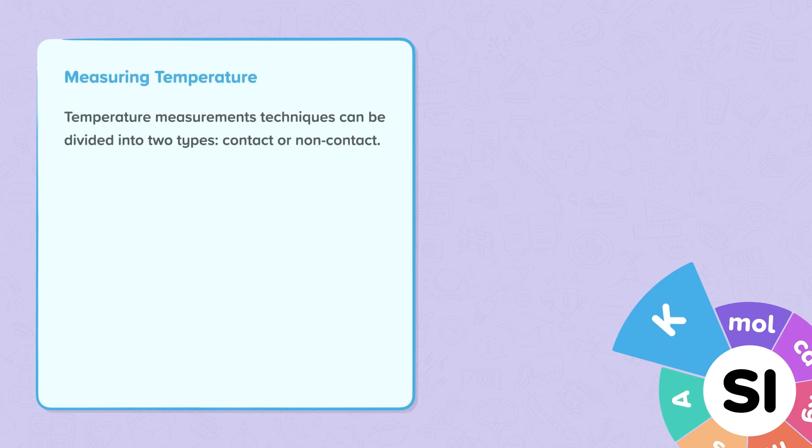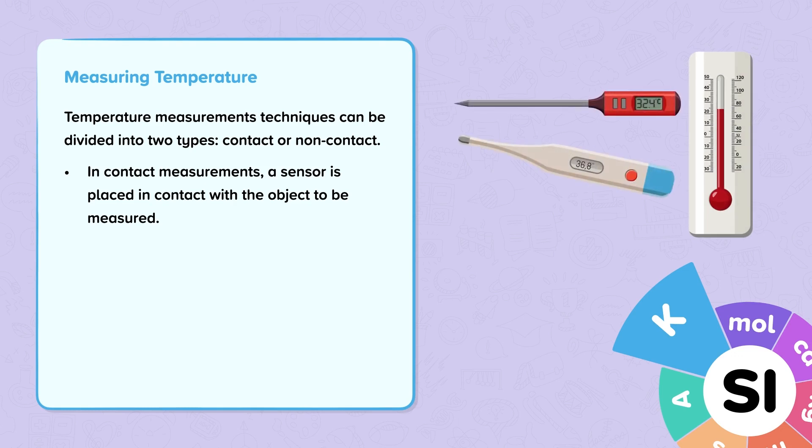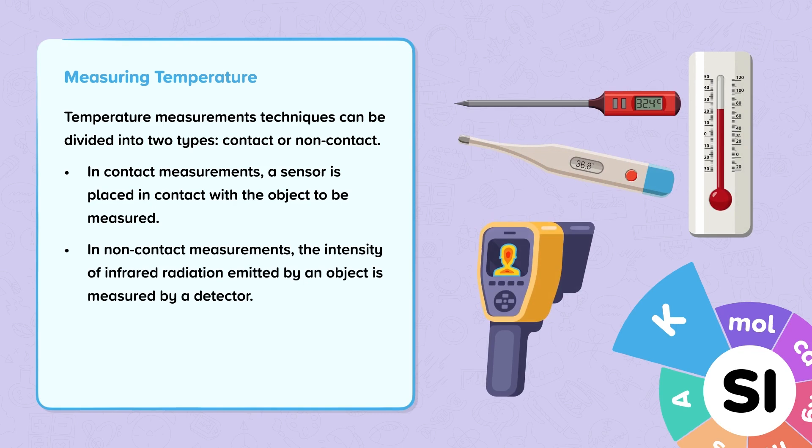Measuring temperature. Temperature measurement techniques can be divided into two types, contact or non-contact. In contact measurements, a sensor is placed in contact with the object to be measured. In non-contact measurements, the intensity of infrared radiation emitted by an object is measured by a detector.